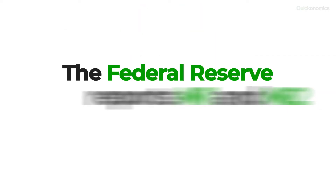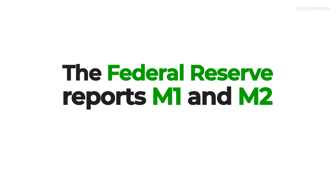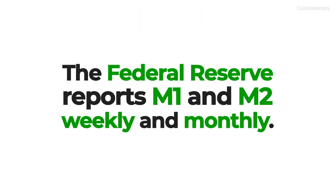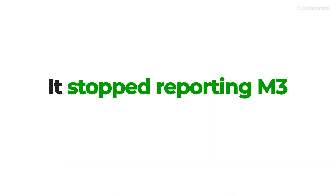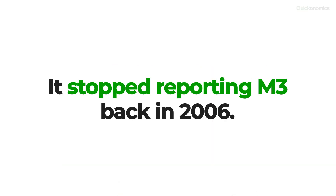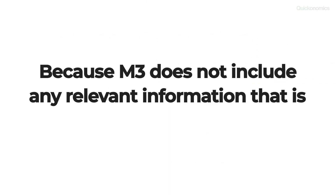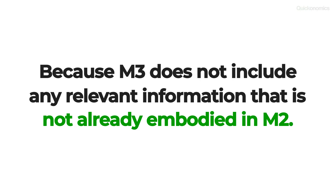In the United States, the Federal Reserve reports M1 and M2 on a weekly and monthly basis. However, it stopped reporting M3 back in 2006 because, according to the Board of Governors, M3 does not include any relevant information on economic activity that is not already embodied in M2.